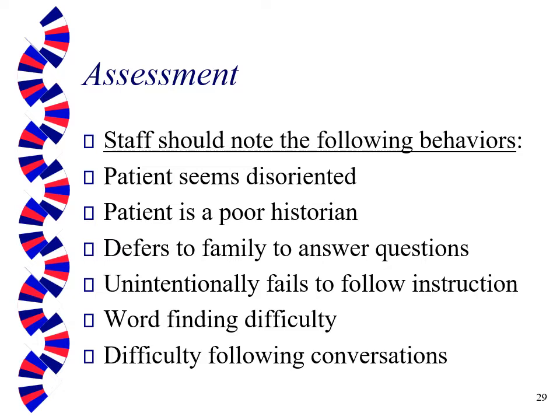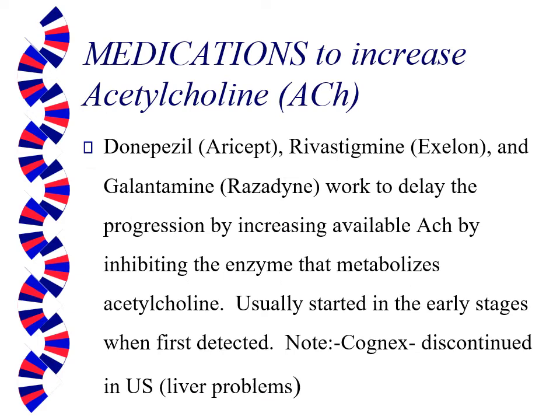Part of your assessment for dementia: are they disoriented? Are they a poor historian? Do they look to the family when you ask a direct question? Can they not follow instructions — not because they're being difficult, but because they can't? Do they have trouble word-finding? Note that word-finding difficulty is also common in people over 50, so don't be overly concerned if it happens to you — for dementia patients it's much worse. Then they can't really follow the conversation.